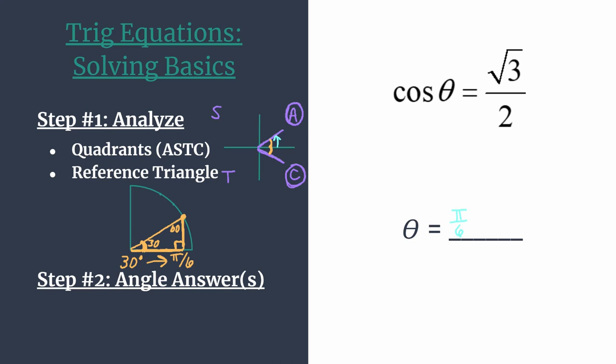Now let's find our quadrant 4 angle. If you know your unit circle well, you may know the angle in quadrant 4 with a pi over 6 reference angle is 11 pi over 6. To find that, note we rotate almost a full rotation, which would be 2 pi. Rewriting 2 pi as 12 pi over 6 with a common denominator, we subtract 1 pi over 6 to get 11 pi over 6 as our second answer.